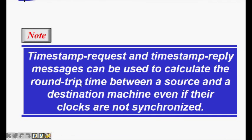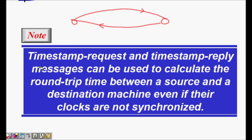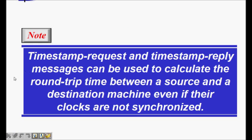Timestamp request and timestamp reply messages can be used to calculate the round trip time between a source and a destination machine, even if their clocks are not synchronized. For example, I put my timestamp here and the other side has its own timestamp — even with a counter running at different values, the timestamp can still be used to compute round trip time.